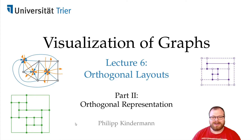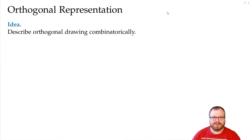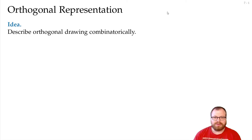We now want to find out how to find an orthogonal representation, which is the second step — the shape step of the topology-shape-metrics pipeline. The idea is that we want to describe the drawing combinatorially, so without producing the drawing itself, we only want to describe how the shape looks.